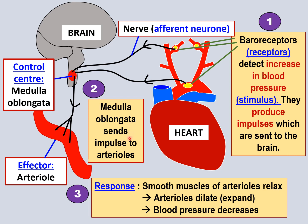The medulla oblongata sends impulses to the arterioles to decrease the blood pressure, because if blood pressure does not decrease and keeps increasing it can damage the blood vessels — it can cause the bursting of blood vessels. Blood pressure is the force of the blood exerted on the wall of the blood vessels like the arterioles; the higher the blood pressure the more the pressure on the wall, and it can cause bursting. So the medulla oblongata sends impulses to the arterioles causing the smooth muscles of the arterioles to relax, the arterioles dilate, and there is more space for blood to flow, so blood pressure decreases. That is the response.